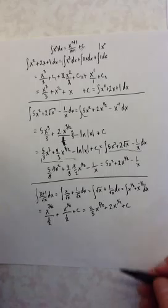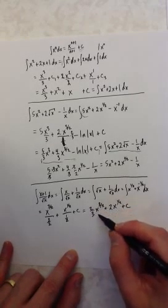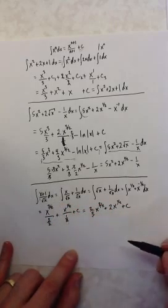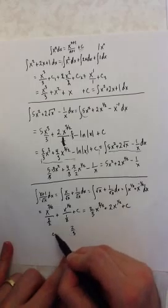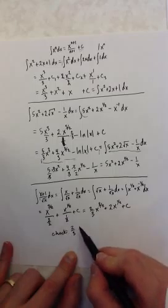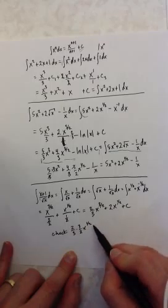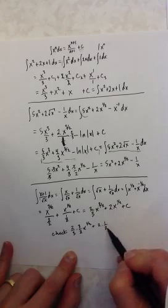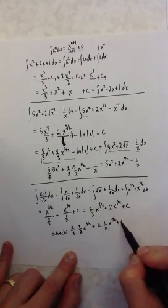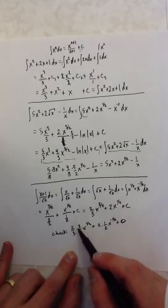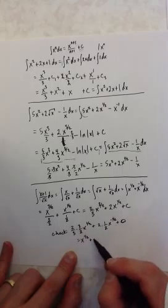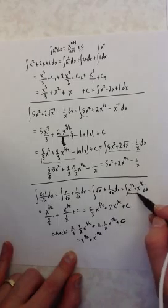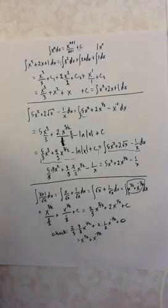I always check by taking the derivative of my antiderivative to make sure it's the same thing I had inside the integral sign. Taking the derivative: 2 thirds times 3 halves x to the 1 half — the 2 thirds and 3 halves cancel — gives x to the 1 half. Then 2 times 1 half x to the negative 1 half — the 2 and 1 half cancel — gives x to the negative 1 half, which is indeed what I had inside my integral sign. So the check checks out.